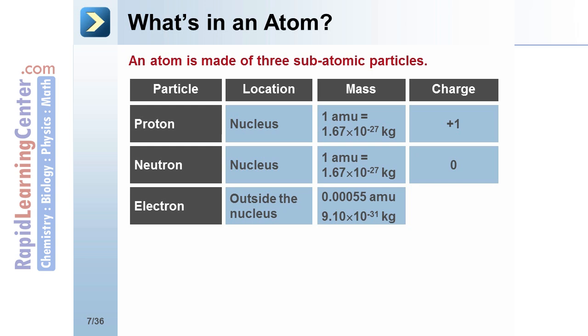Electrons are found outside the nucleus. The mass is 0.00055 amu, and the charge is negative 1.